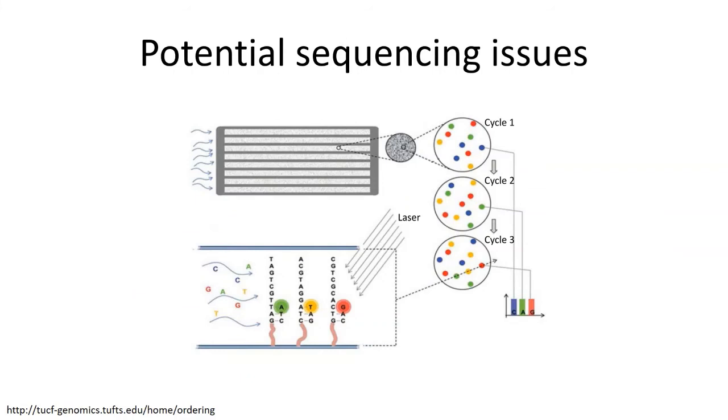Now I'm going to talk about some potential sequencing issues that you might run into from the instrument itself. One thing that is very important for sequencing is cluster density on a flow cell, and this basically comes down to the quantitation of your library. You need to flow in a precise amount of your library in order to get a good cluster density.